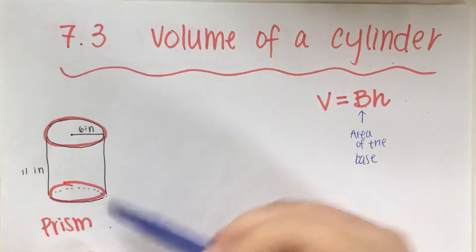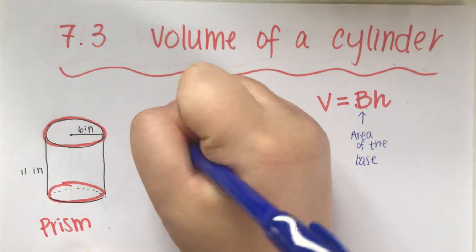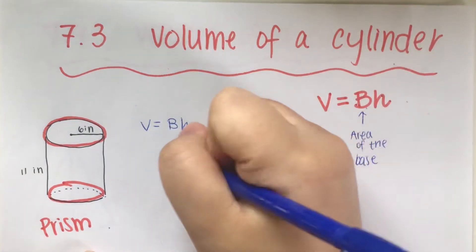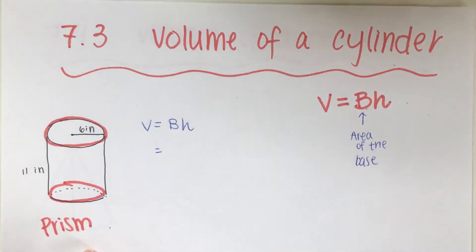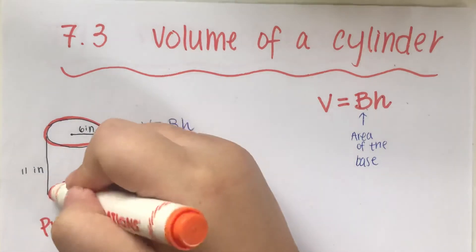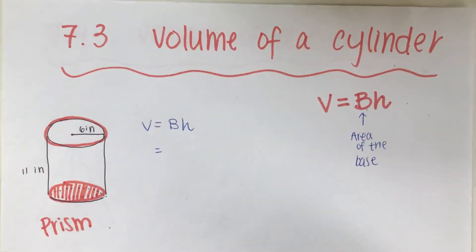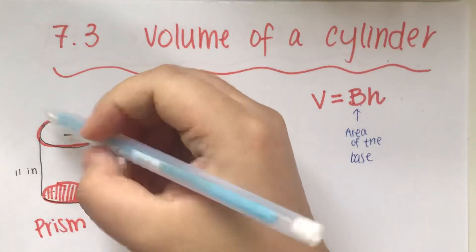So now volume is equal to area of the base multiplied by the height. Area of the base—what is the base? This shape on the bottom, right? This shape, it's a circle.